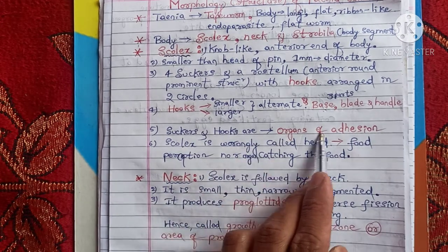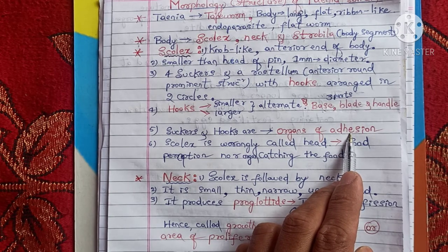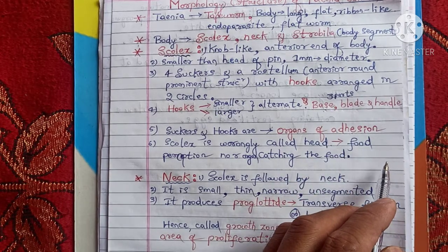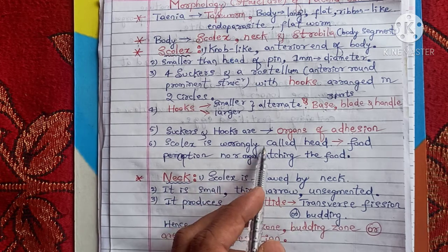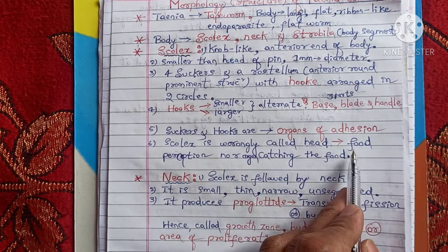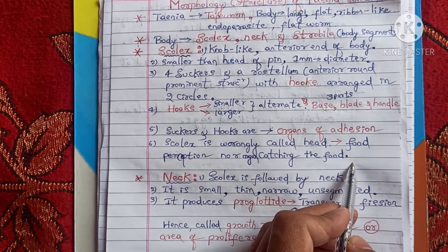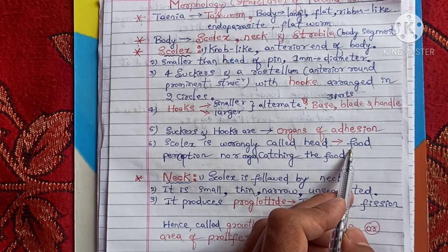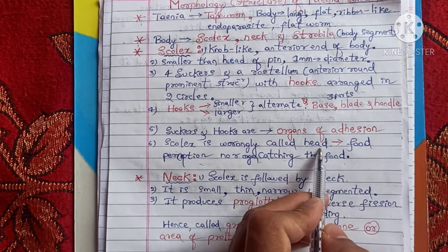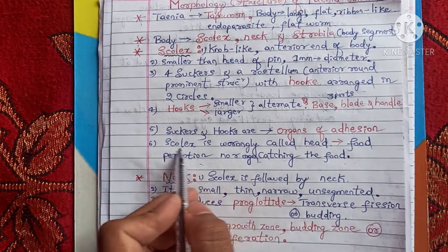The suckers and hooks are organs of adhesion, meaning they help in attachment with the wall of the intestine of man. Sometimes the scolex is wrongly called a head, but actually it is not a head — because it is neither an organ for food perception nor for catching food. It does not perform any of these functions, therefore we cannot call the scolex a head.